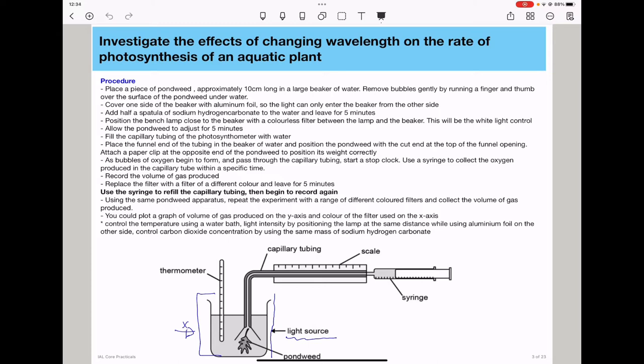You will need to record the volume of gas produced, maybe in a table, so that you can be able to repeat experiments and calculate the mean. You will then replace the filter with a filter of a different color and leave for 5 minutes before you do the experiment again. That is at this point here. Remember in the first point we had a white filter. Now we are going to use a different color filter so that the experiment is exposed to a different wavelength.